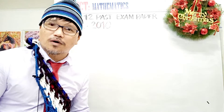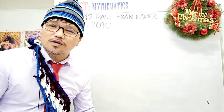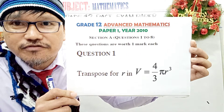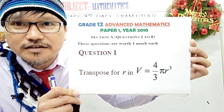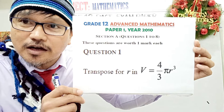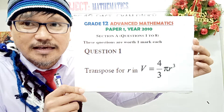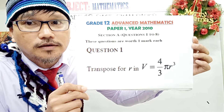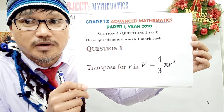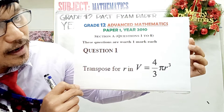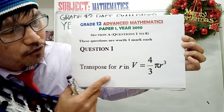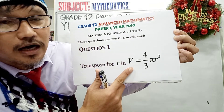Let's now begin with paper 1, question 1. This is question 1 of the grade 12 advanced mathematics paper 1, year 2010. This is a very common question in the national examination, so pay attention. This question is more on transposition of a formula — making the pronumeral the subject.